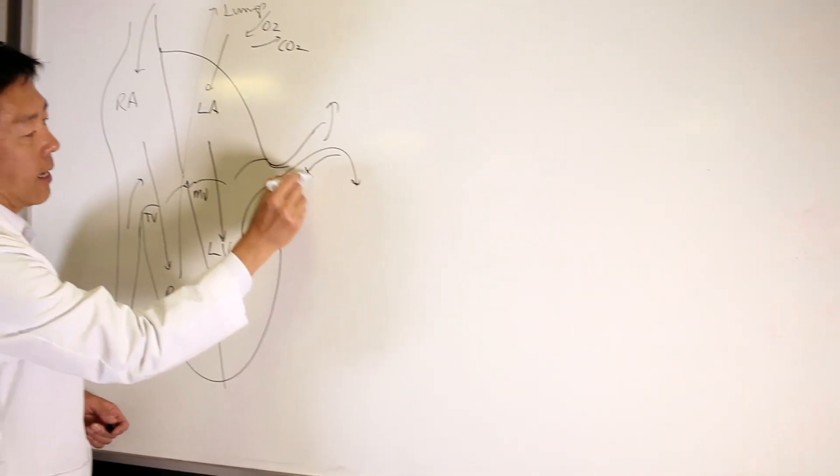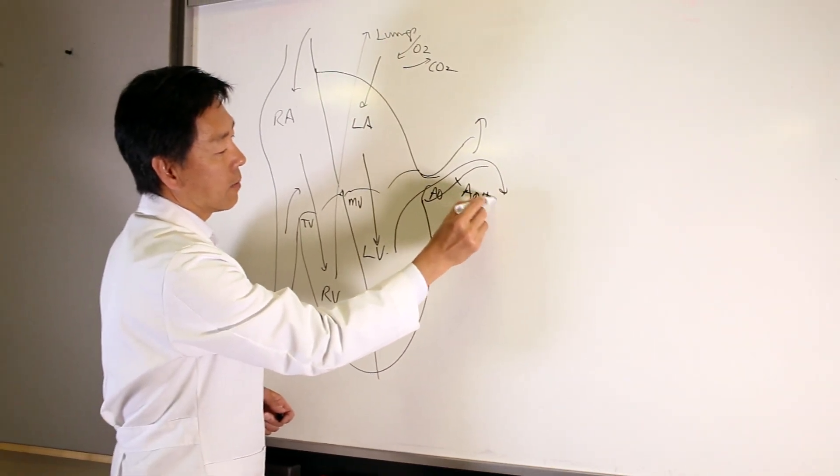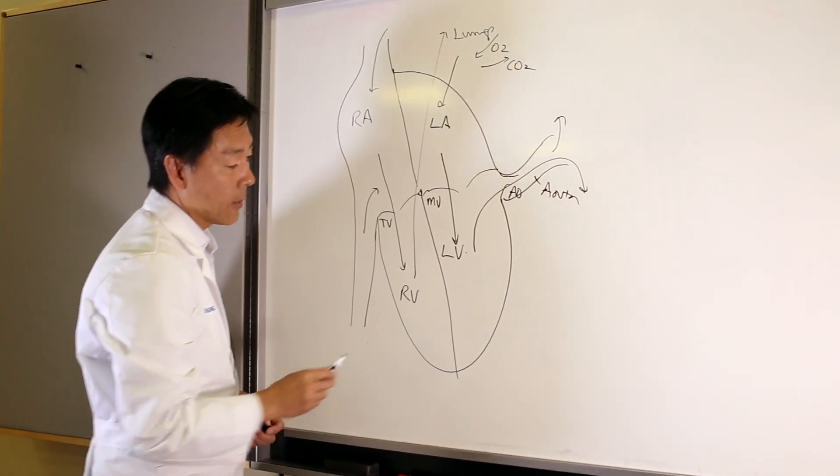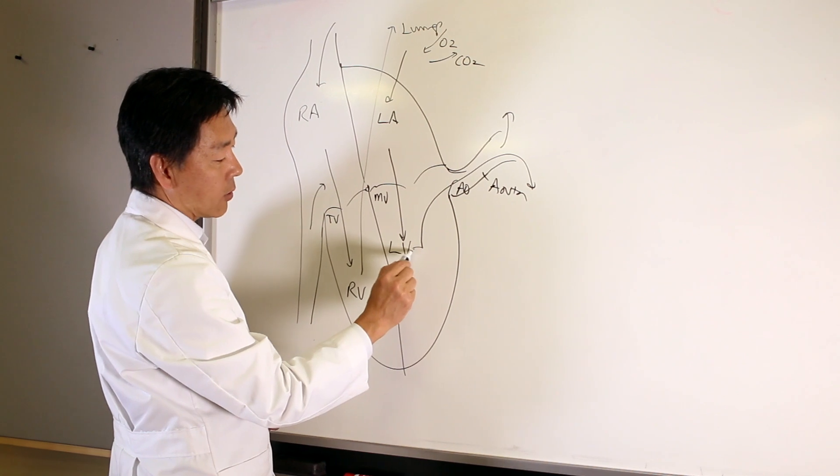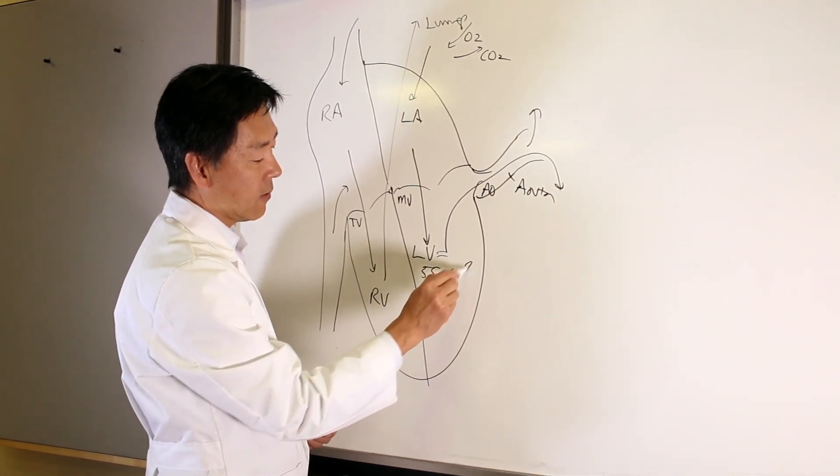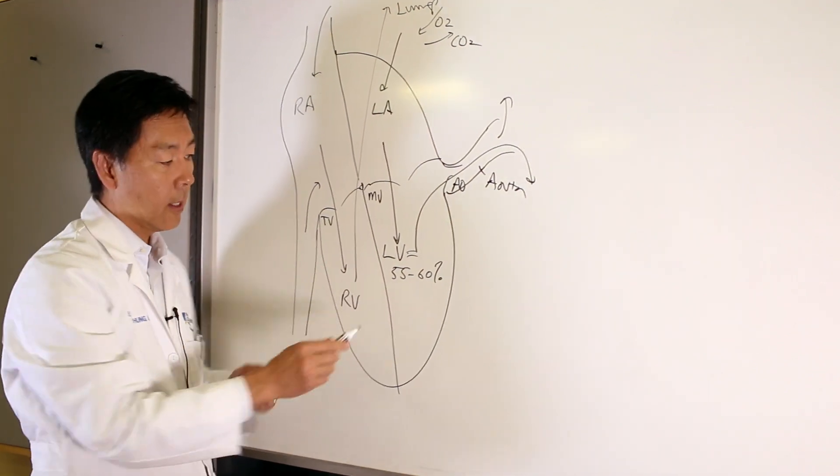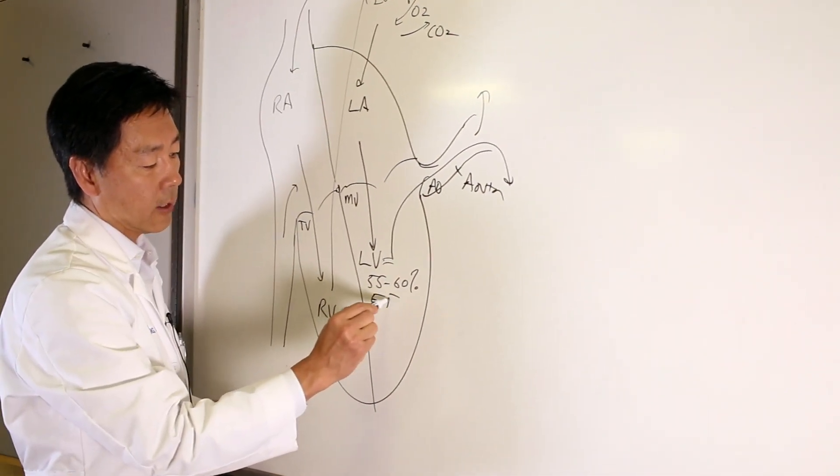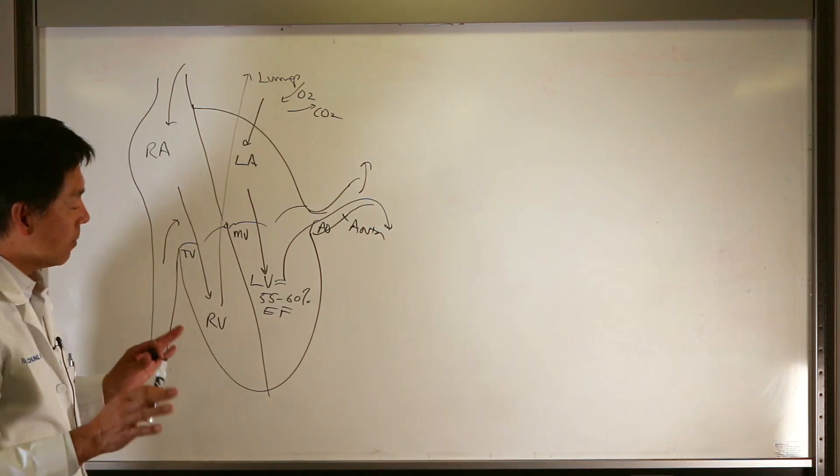And then into the aorta which is the main artery in your body. Now normally this left ventricle squeezes about 55 to 60 percent of its volume with every beat. That's called ejection fraction.